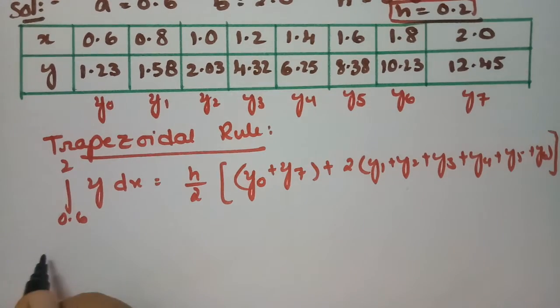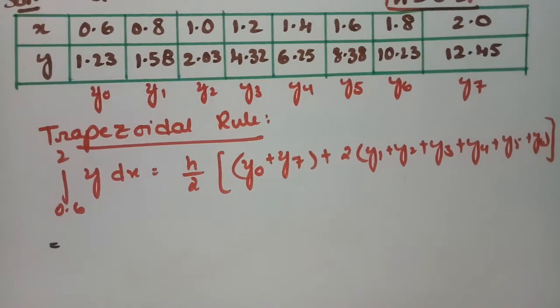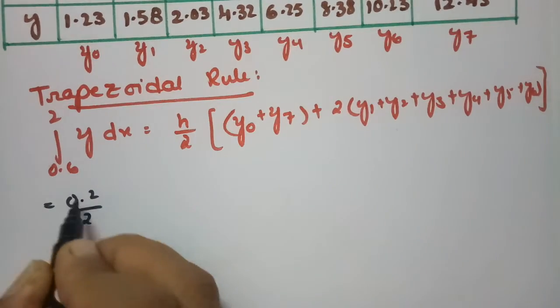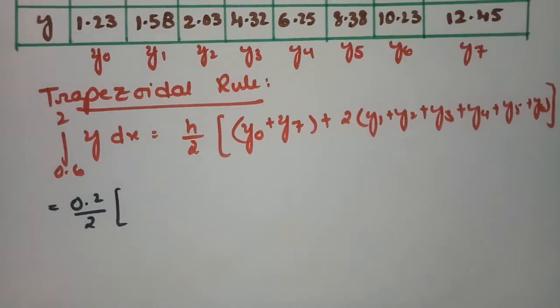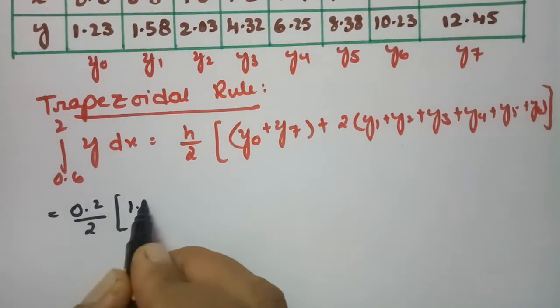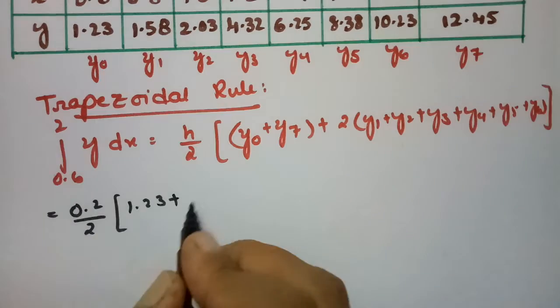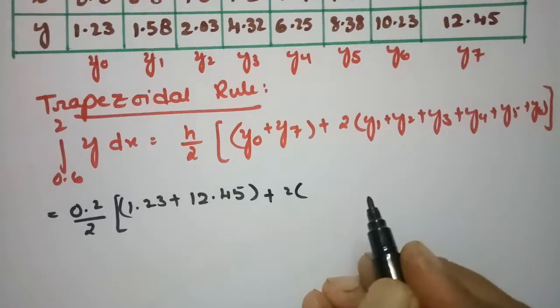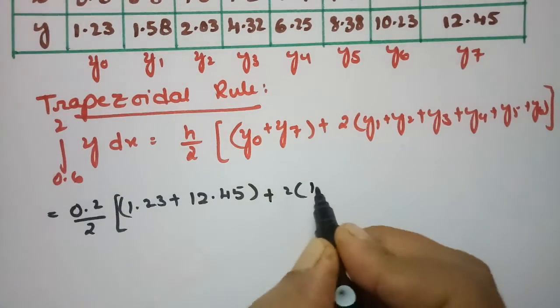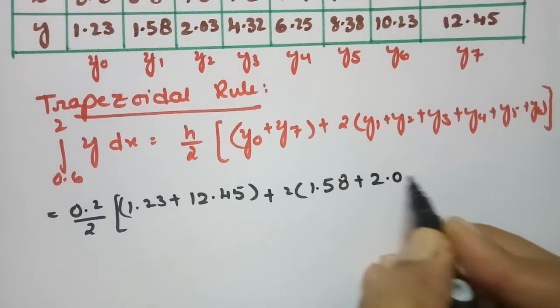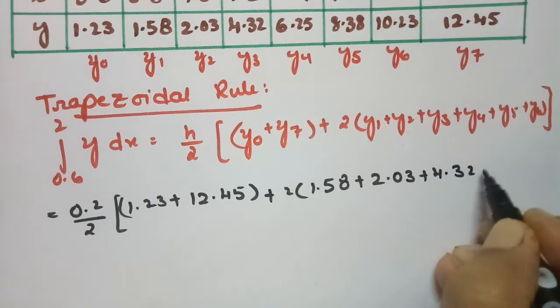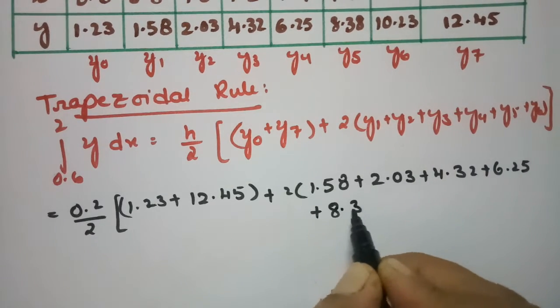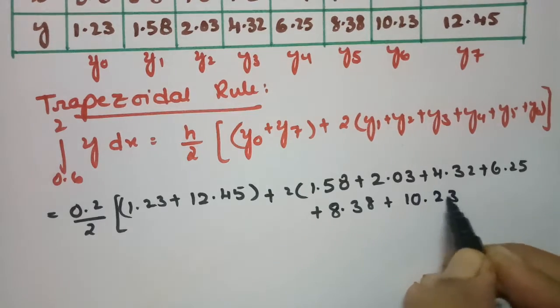First, our h value is 0.2. So I am writing 0.2 by 2 into the first value, which is 1.23, plus the last value, which is 12.45, plus 2 times the rest of the values: 1.58 plus 2.03 plus 4.32 plus 6.25 plus 8.38 plus 10.23.